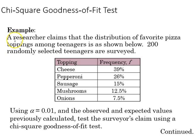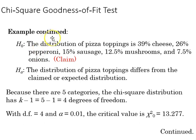Here's an example. A researcher claims that the distribution of favorite pizza toppings for teenagers is as shown below, and 200 randomly selected teenagers were surveyed. Using an alpha of 0.01 and the observed and expected values previously calculated, we'll test the claim using a chi-square goodness of fit test. Our null hypothesis is that the distribution of pizza toppings matches the expected table, and the alternative is that the distribution differs.